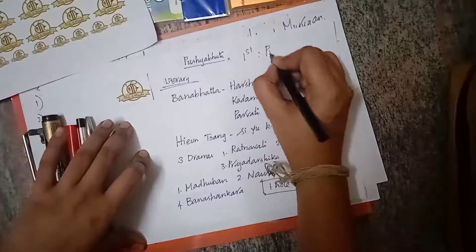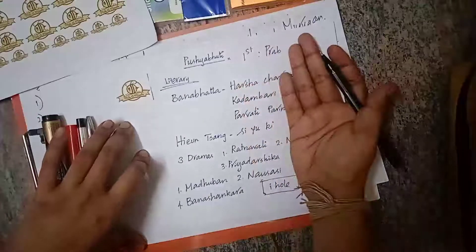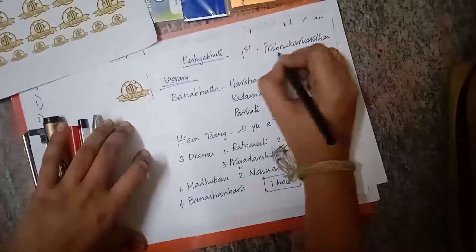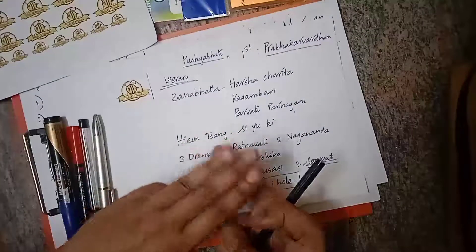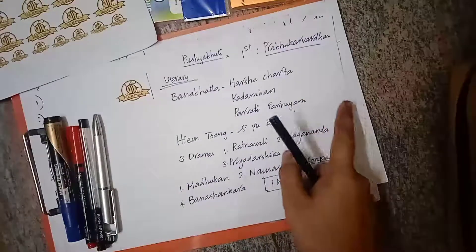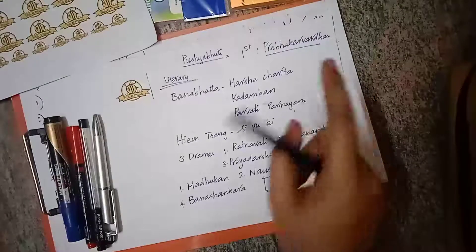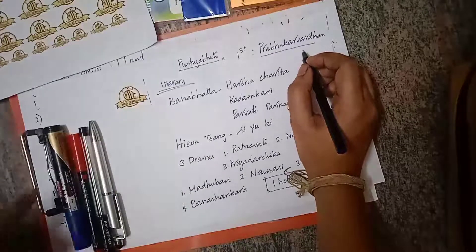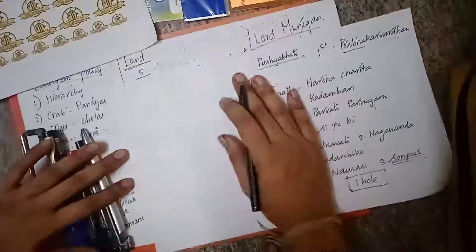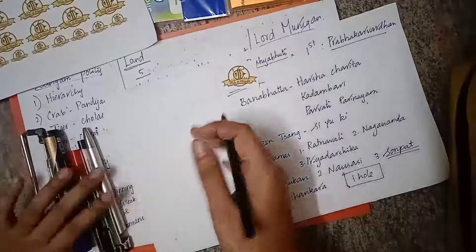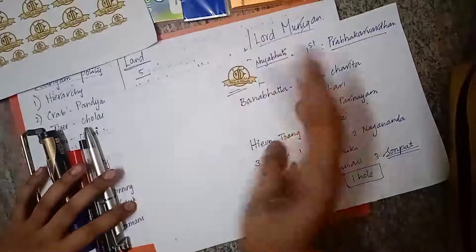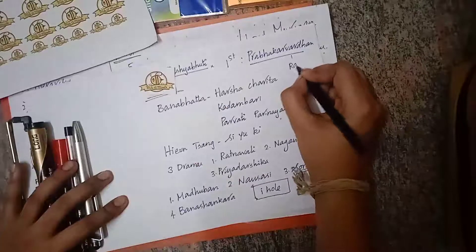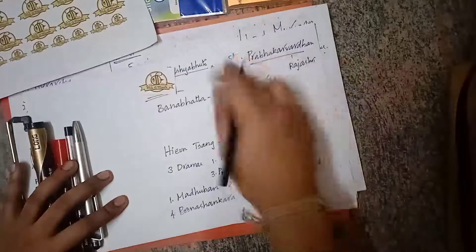The first important king in the Pushyabuti dynasty is Prabhakarvadhana, who is the father of Harshavardhan. He had an elder son called Rajavardhan, a younger son called Harshavardhan, and a daughter called Rajasri. Rajasri was married to a Maukari king called Grihavarman.